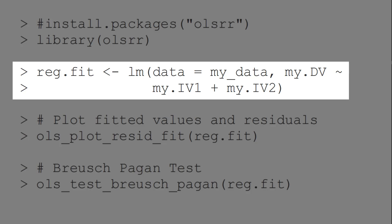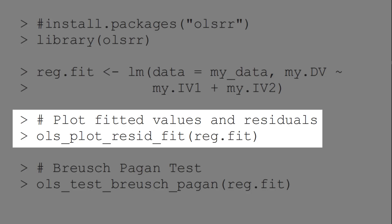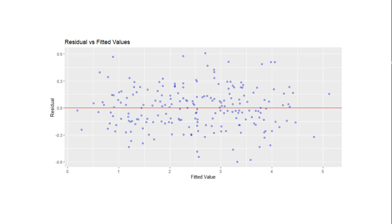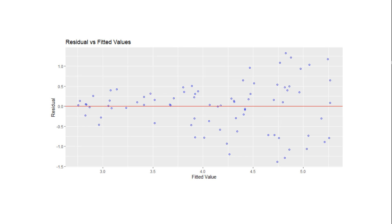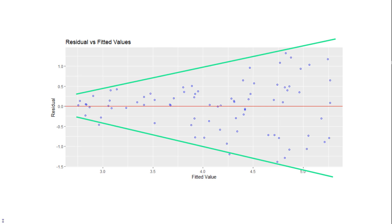First, we run our regression with the LM function. Then we can look at a plot of fitted values and residuals using this function here. The resulting scatter plot should look more or less random, as in this example. What we don't want to see is a funnel shape, like this example. This would indicate heteroscedasticity.